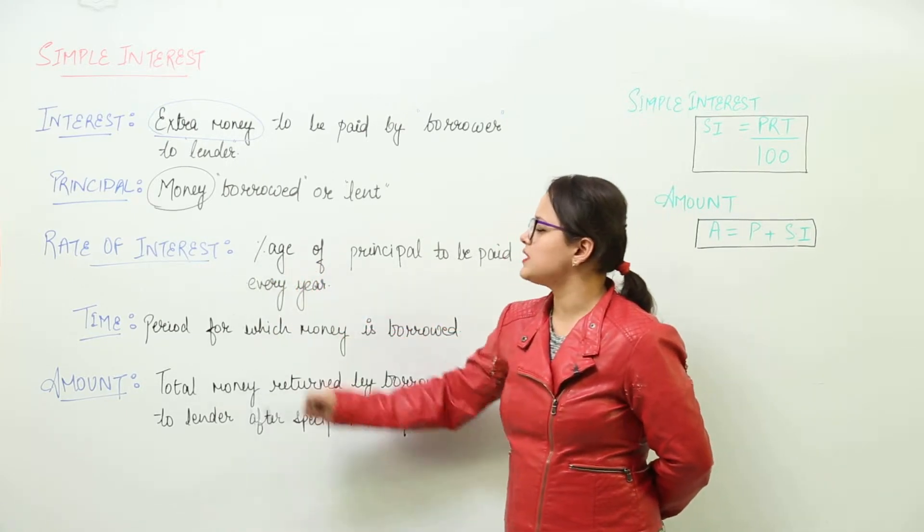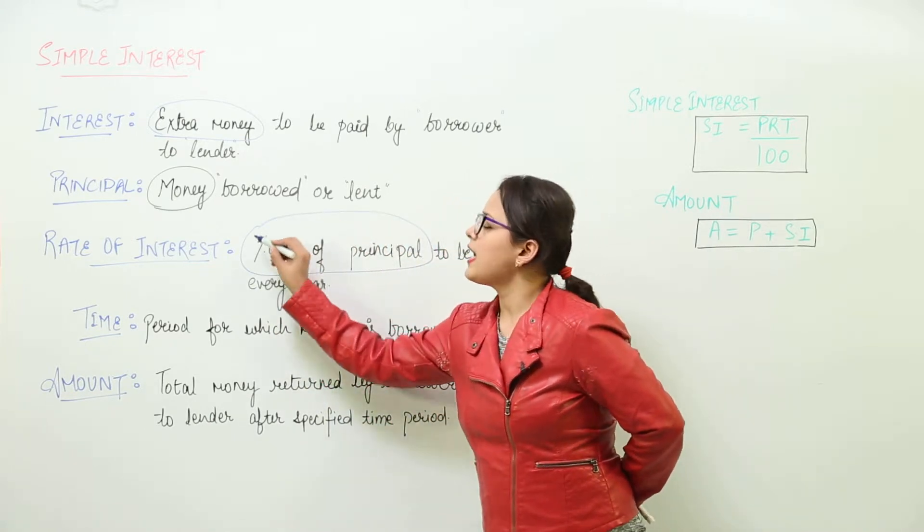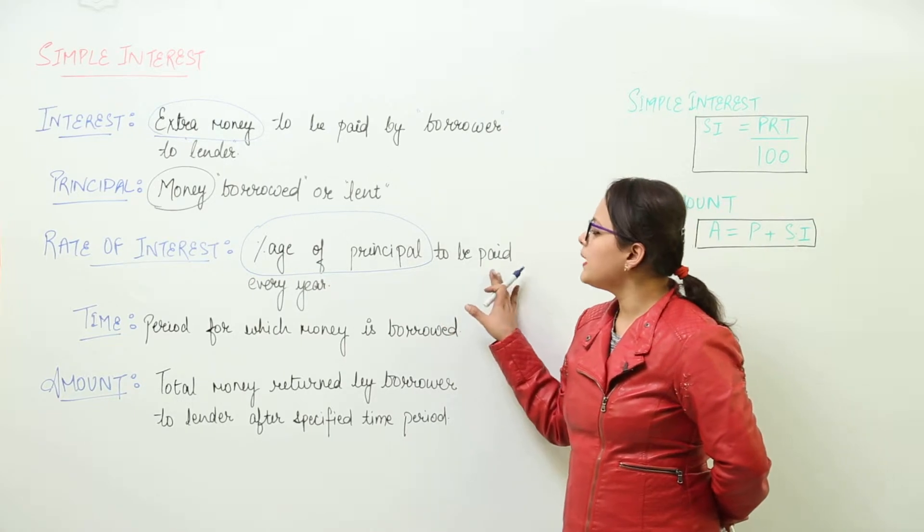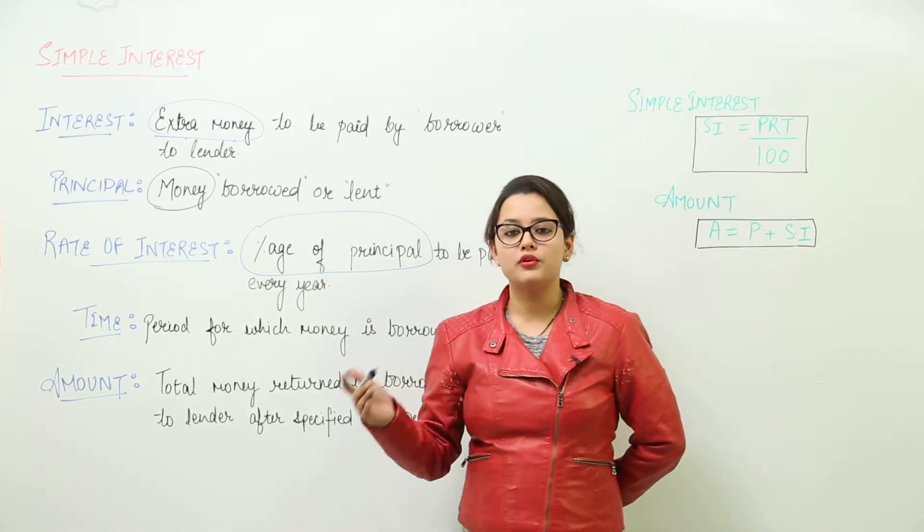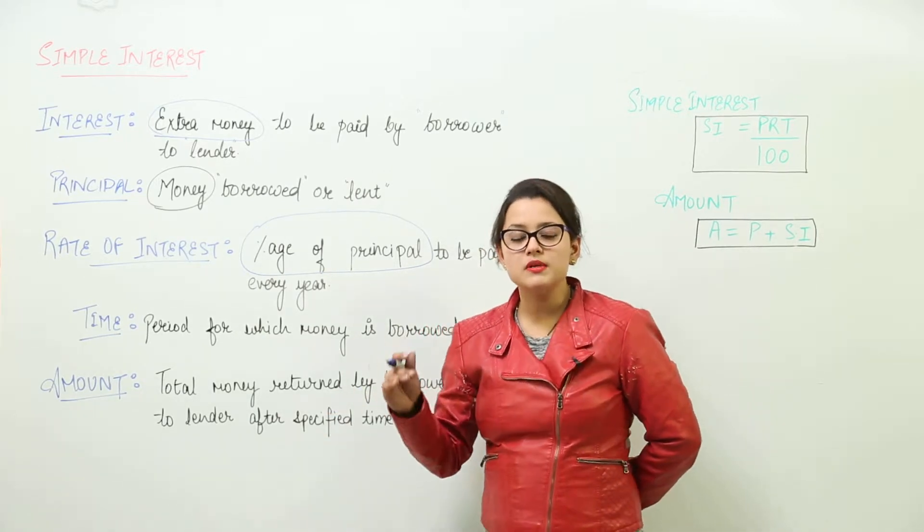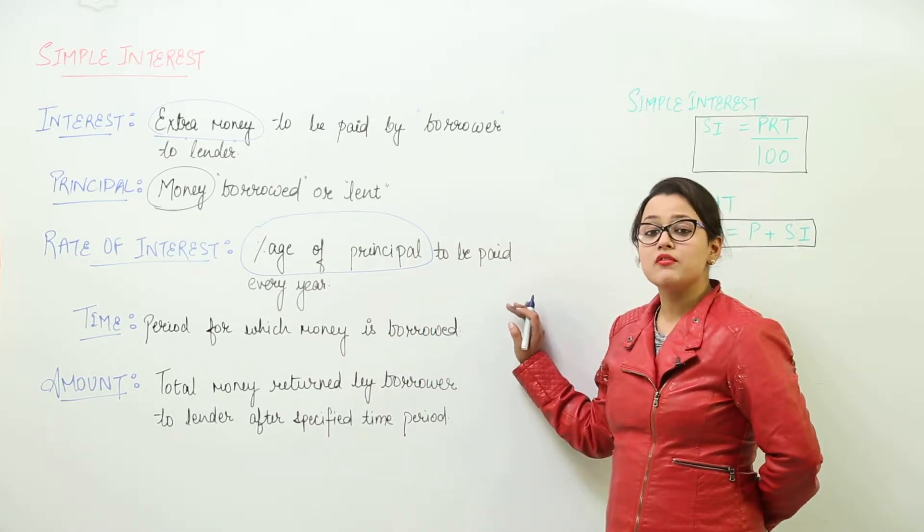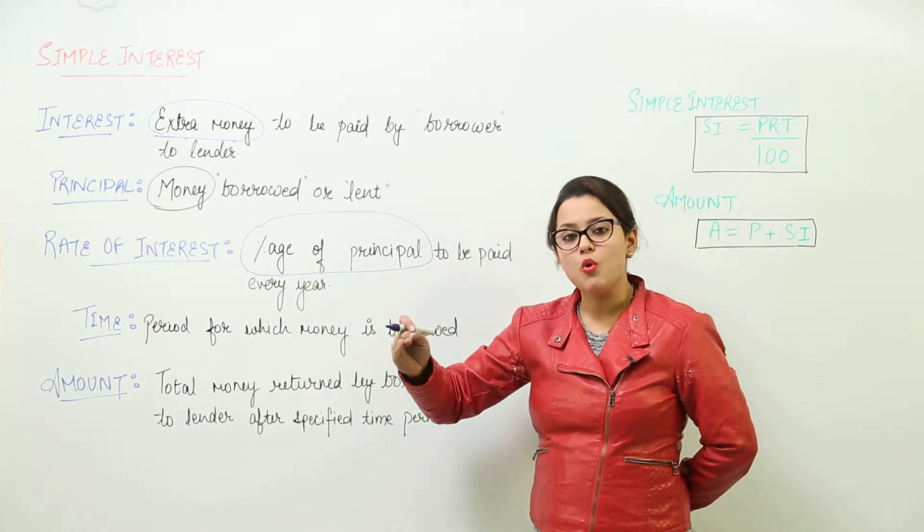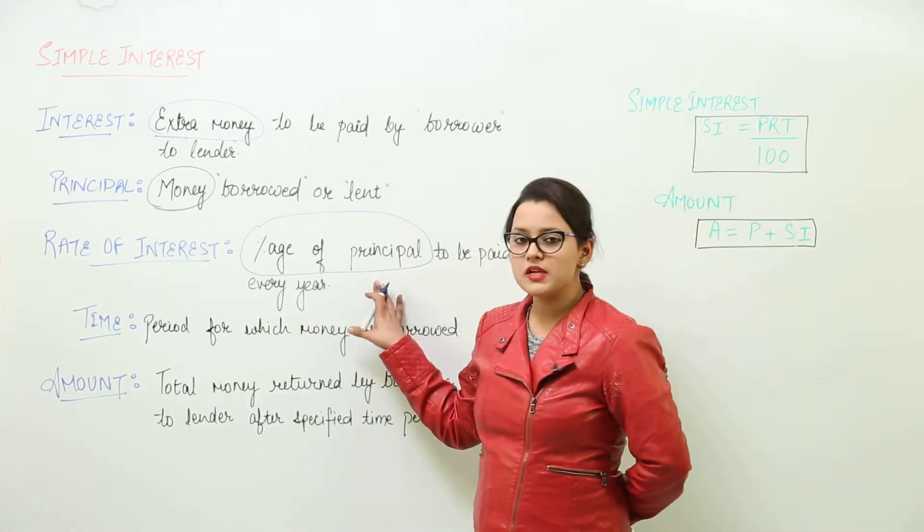Next is the rate of interest. Rate of interest is the percentage of principal. Actually, it is the percentage of principal to be paid every year. Say for example, I have taken 100 rupees, borrowed 100 rupees from my friend. She tells me that I will be charging 10% interest per year. That means every year I have to pay her back 10% more than the amount of principal that was there. So that is the rate of interest.